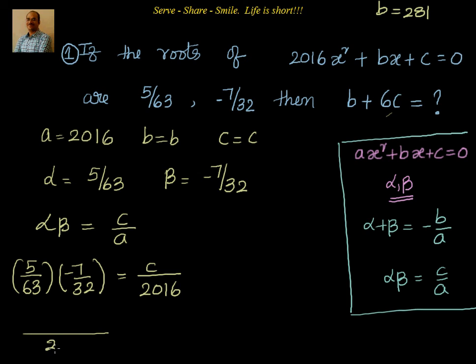Again, 63 × 32 is 2016, and you multiply them you get -35. So c/2016 = -35/2016. I can cancel 2016. That gives me c = -35. So let's go here and write down c = -35.